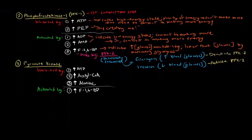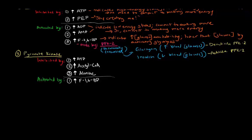Now let's get into pyruvate kinase. Pyruvate kinase has three different allosteric inhibitors. The first is high levels of ATP — same reasoning as above: it indicates plenty of energy. If there's plenty of energy around, there's no need to keep creating more. Pyruvate kinase makes that last bit of ATP, so we don't want it to be active if we already have plenty of ATP around.